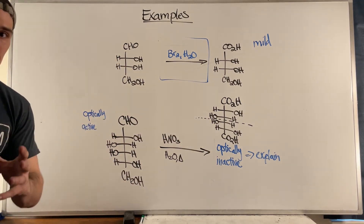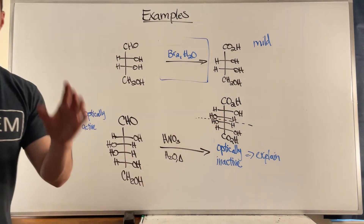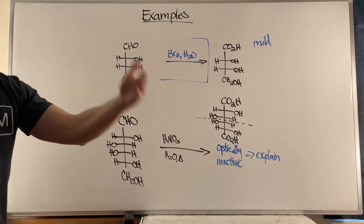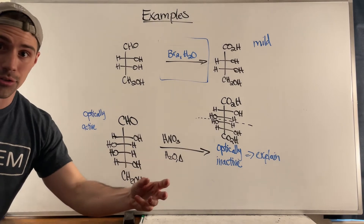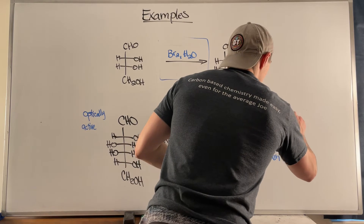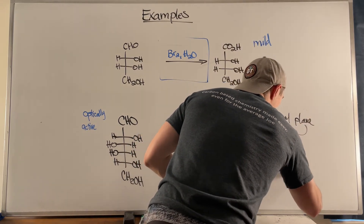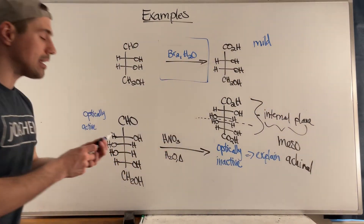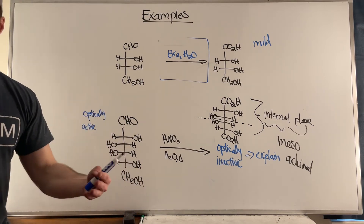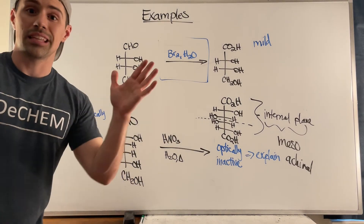You need to reach back to some stereochemistry knowledge here. When we oxidize both the top and the bottom, that was the only thing keeping us from having a plane of symmetry. Even though we have chiral centers in this molecule, remember: to be chiral you need stereocenters but you also need to not have an internal plane of symmetry. This molecule has an internal plane of symmetry, which makes it meso, and as a result it is achiral. So it will not bend the plane of polarized light — that's why it's optically inactive.